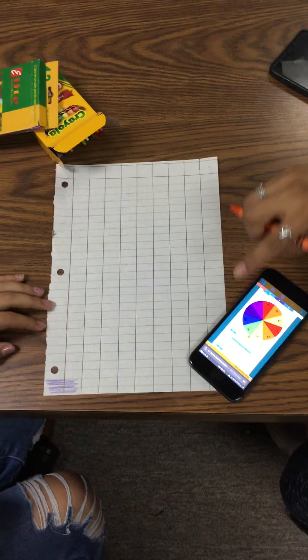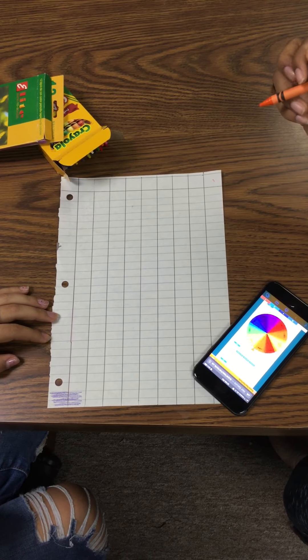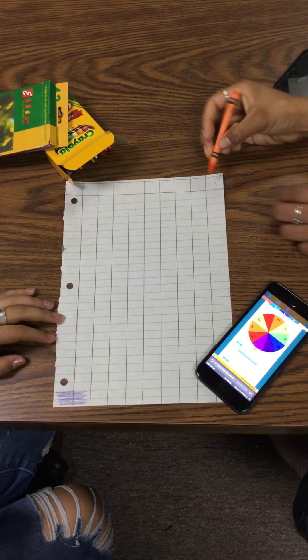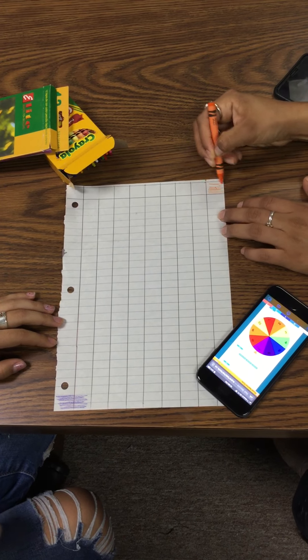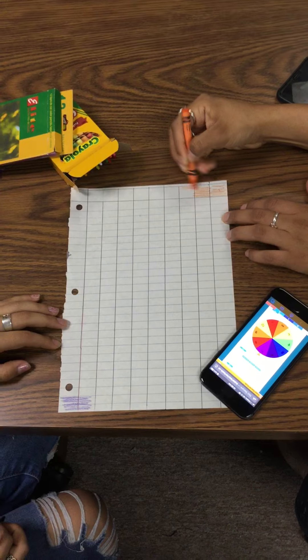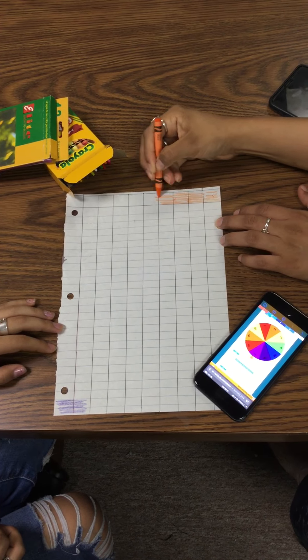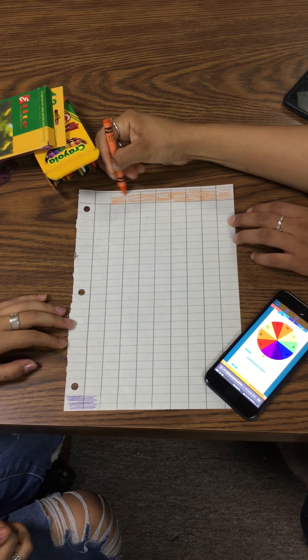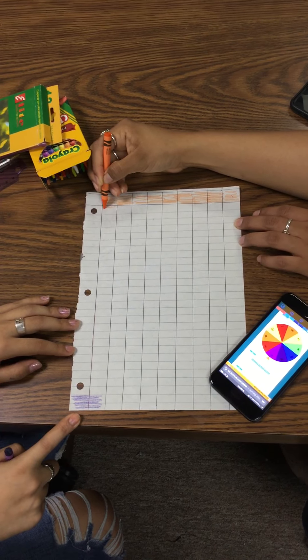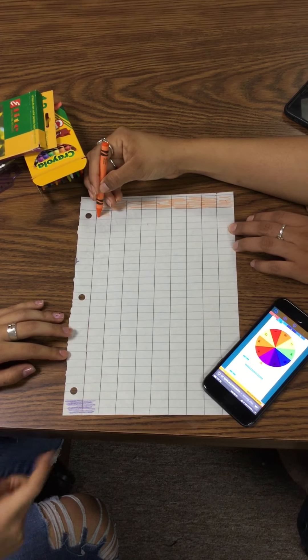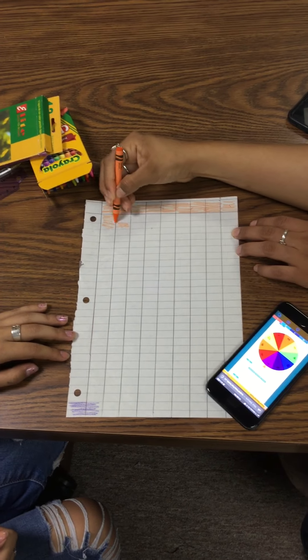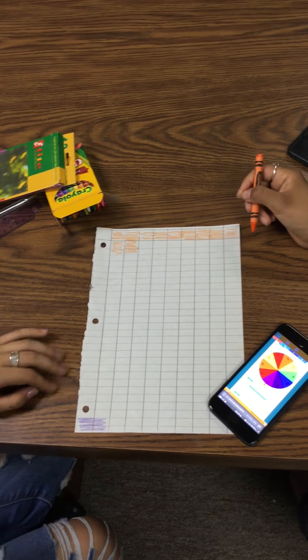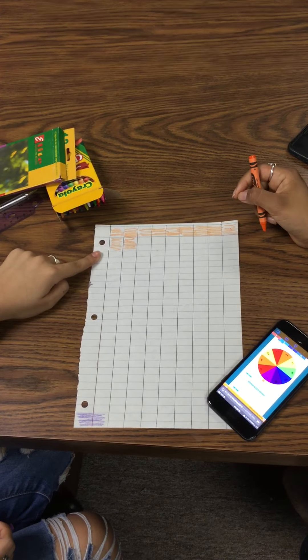Four plus seven is eleven, so she's shading eleven squares. The purpose of the game is for you to capture the most squares in order to win. However, you cannot overlap your partner's squares.